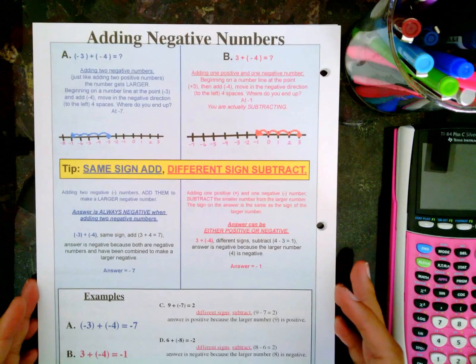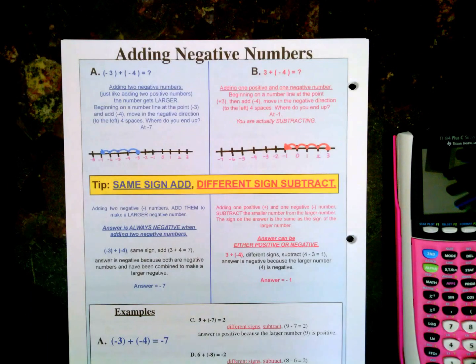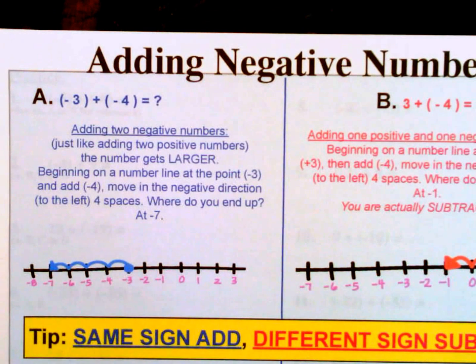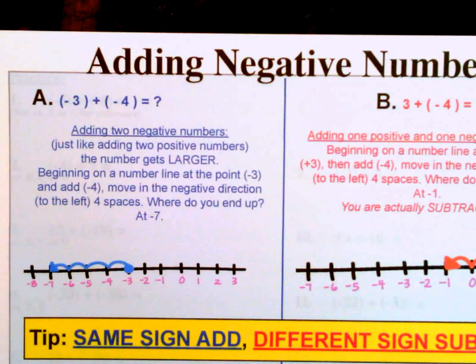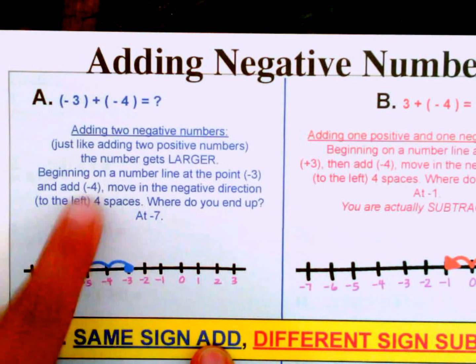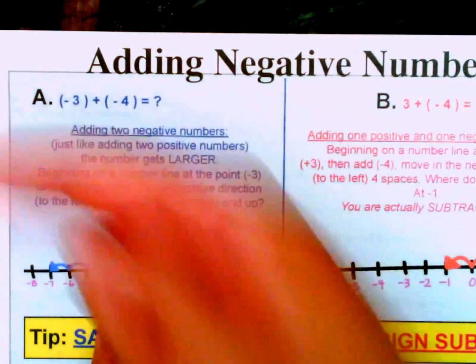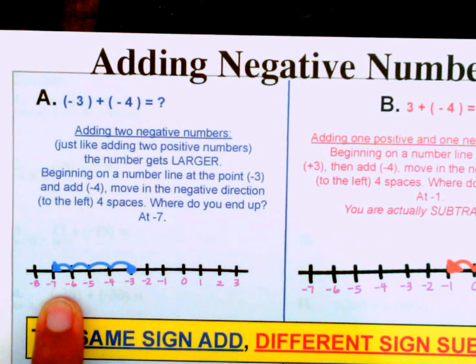We are adding negative numbers. Example A: negative 3 plus negative 4. If you're adding two negative numbers, this is just like adding two positive numbers — the number is going to get bigger. Just like 3 plus 4 equals 7, negative 3 plus negative 4 gives you a bigger negative number: negative 7. On the number line, if we start at negative 3 and go minus 4 in the negative direction, we end up at negative 7.